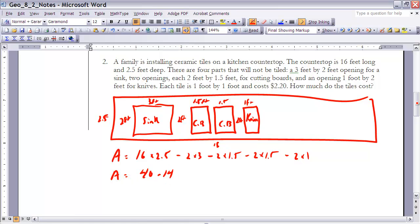If I do that, I get 16 times 2.5 is 40, and then the other things that I'm cutting out, if I add those all up, I get 6 plus these two together are going to be 6, which is 12, and then another 2 is 14. So because they're all being subtracted from the total, I'm just going to do 40 minus 14. If I do that, I get 26, and that's in terms of square feet of tiles that we need.